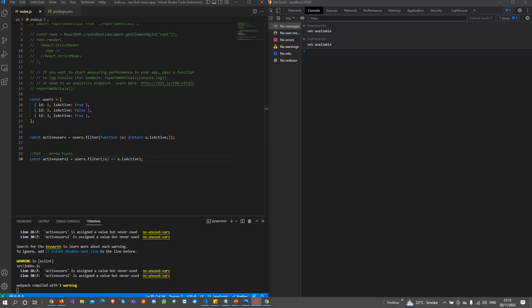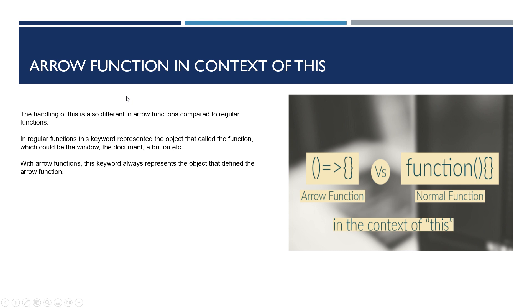There is also one point of confusion when we write the this keyword with functions in a class. The handling of this is different in arrow functions compared to regular functions. In a regular function, the this keyword represents the object that called the function, which could be window, document, a button, or anything. With ES6 arrow functions, the this keyword always represents the object that defined the arrow function.